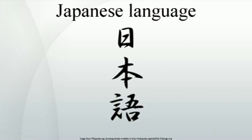A common ancestor of Japanese and Ryukyuan languages or dialects is thought to have been brought to Japan by settlers coming from either continental Asia or nearby Pacific Islands, or both, sometime in the early to mid-2nd century BC, the Yayoi period, replacing the language of the original Jomon inhabitants, including the ancestor of the modern Ainu language. Very little is known about the Japanese of this period, because writing had yet to be introduced from China, so anything that can be discerned must be based on the reconstructions of Old Japanese.